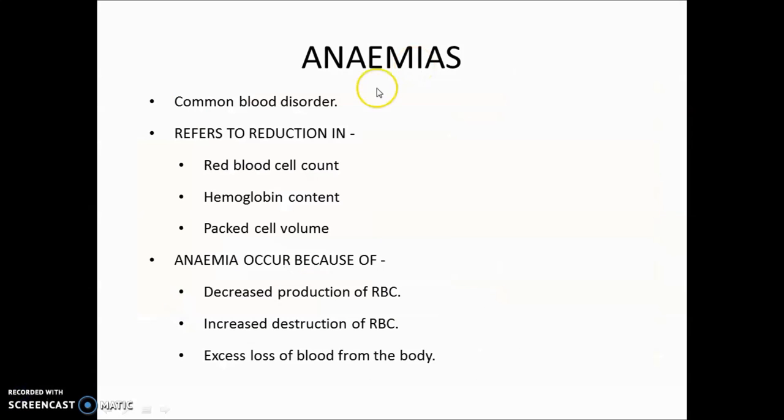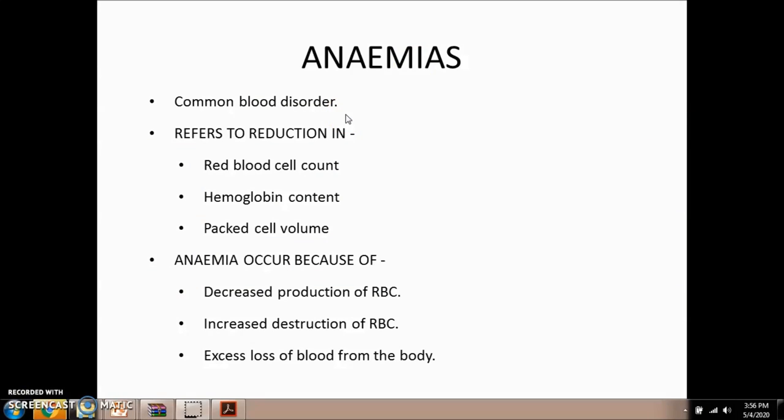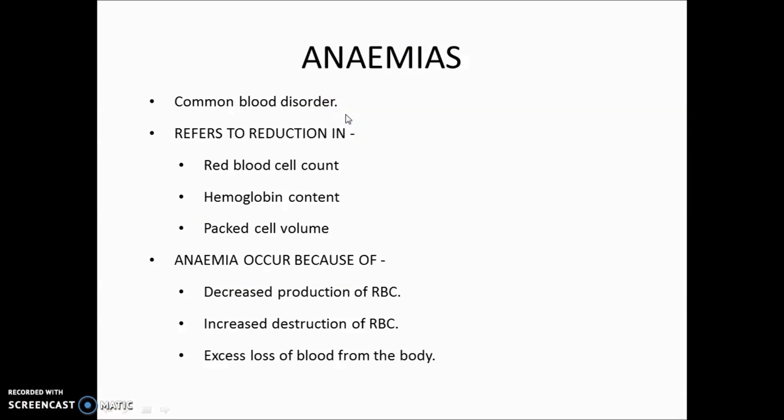Anemia is the commonest blood disorder. It can occur when blood volume is less, when RBC count is less, or when hemoglobin content in RBC is less. Anemia is related to RBC count, hemoglobin, and PCV — whenever these three are less, anemia will occur.